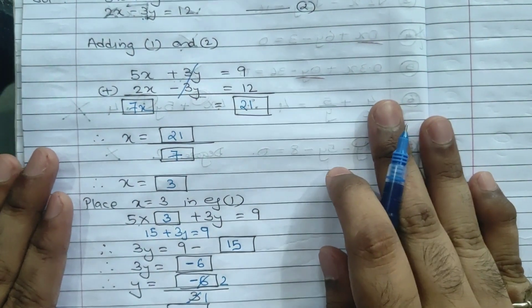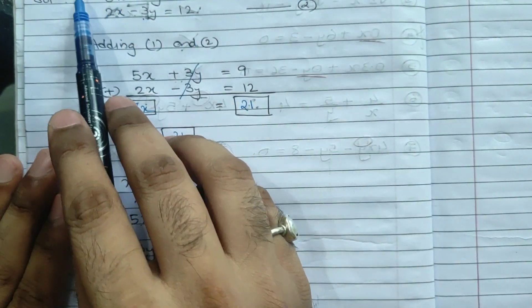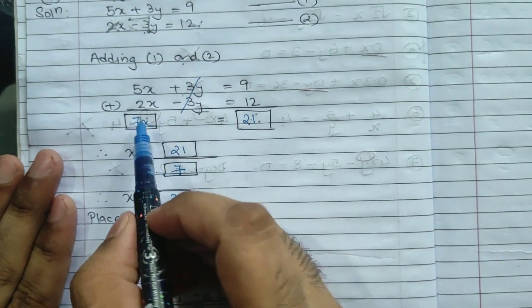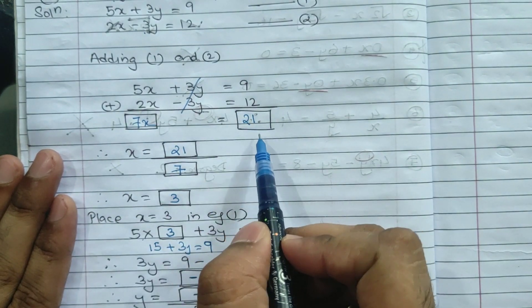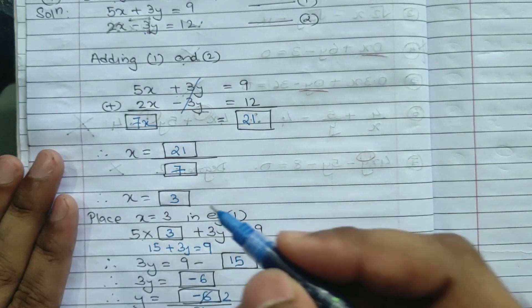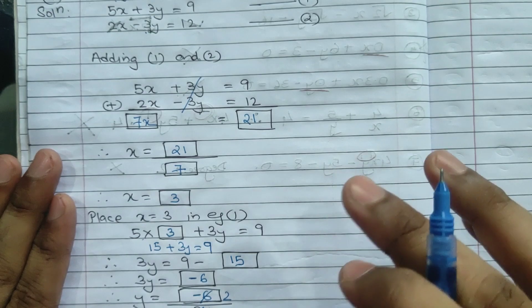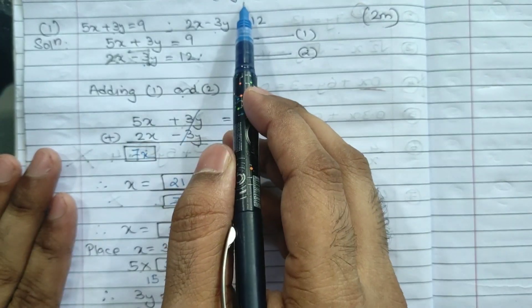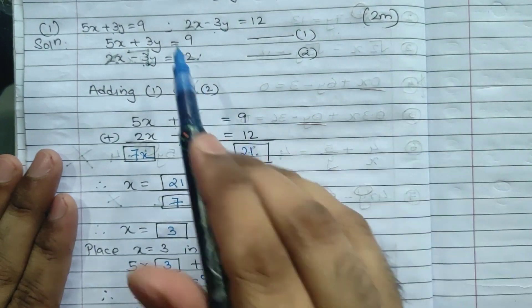One more question students generally ask us - Sir, do we have to solve this whole activity-based sum? Yes, we have to solve this whole question and write it. For the boxes, don't write directly. Use your pencil and scale so the presentation is very good. So this is your first question from practice set 1.1 which is on page number 4.